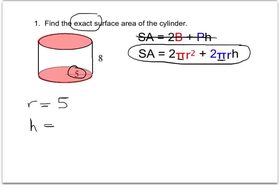h is the height of the cylinder, the distance between the bases, and that's given to us outright.